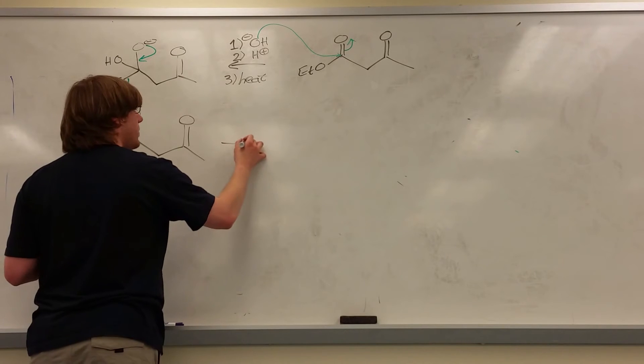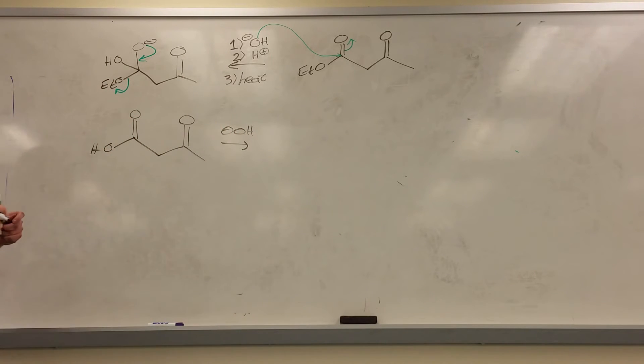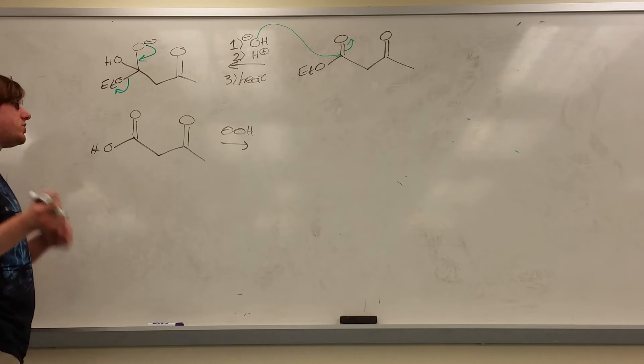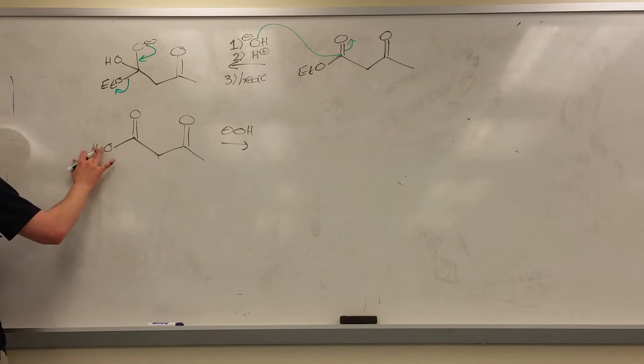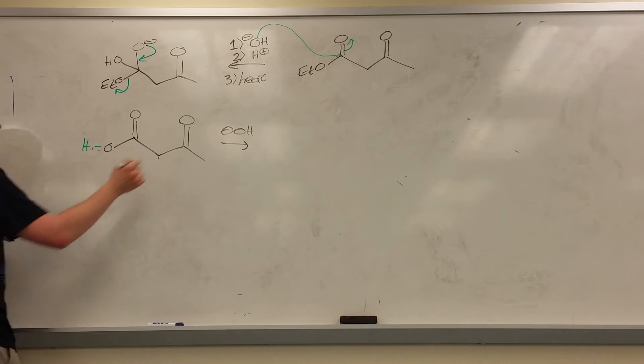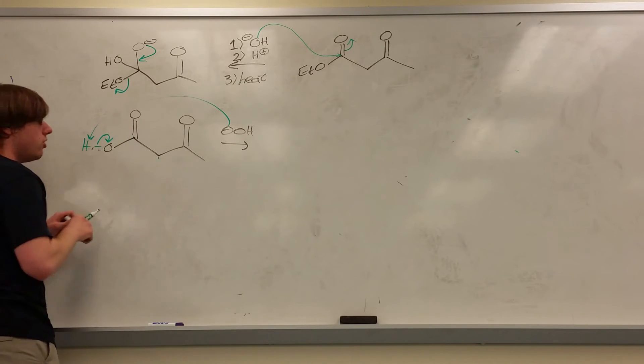Now, keep in mind, again, we have a lot of that OH minus floating around, which means it's going to love to do things. Now, we have a bunch of acidic protons in the structure. We have one here, but one that's even better than this would probably be the hydrogen on the carboxylic acid. And that OH minus can very quickly come in and grab that proton, making your O minus.